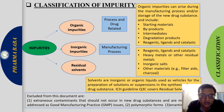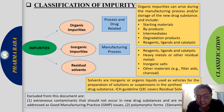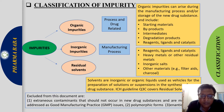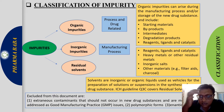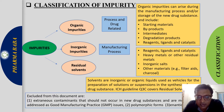Organic impurities are drug-related impurities which arise from the drug substance storage or the process of drug substance manufacturing. They can arise from starting materials, byproducts, intermediates, degradation products, reagents, ligands, and catalysts used during the manufacturing process or during storage of the new drug substance.